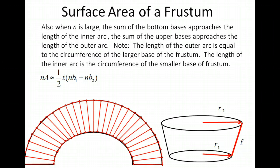When n is large, the sum of the bottom bases approaches the length of the inner arc, and the sum of the upper bases approaches the length of the outer arc.